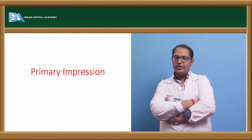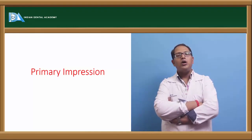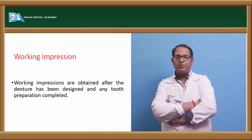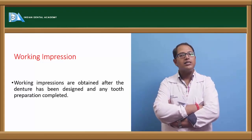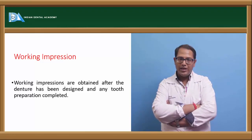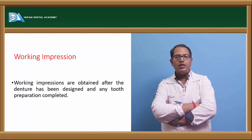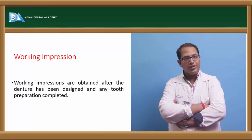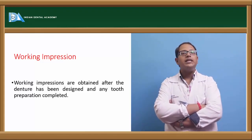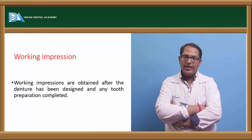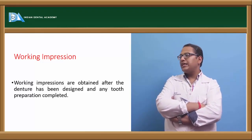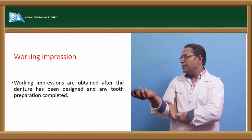Initially, we need a primary impression — also called a diagnostic impression — where we look at the entire cast and decide what we are going to plan for that particular patient: what is best suitable and what is the classification of the removable partial denture. For that we make a primary impression. The best material for a primary impression is alginate, which is easy to manipulate, easy to set, and inexpensive. Working impressions are obtained after the denture has been designed and any tooth preparations are completed.